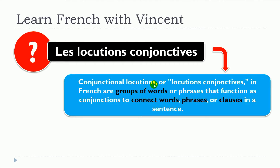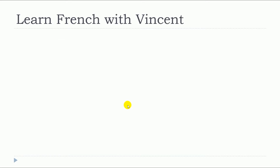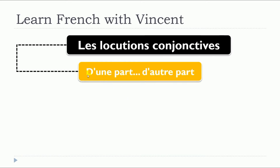Conjunctional locutions, or locutions conjonctives in French, are groups of words or phrases that function as conjunctions to connect words, phrases, or clauses in a sentence. These locutions are important for expressing various relationships between different elements in a sentence. So, this lesson is about d'une part, d'autre part.